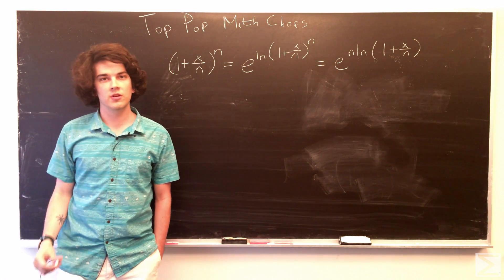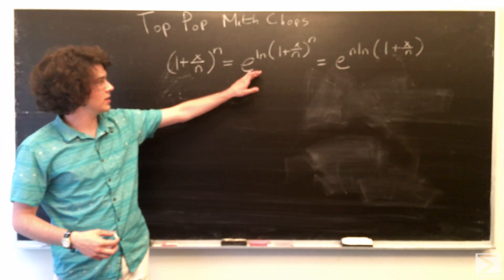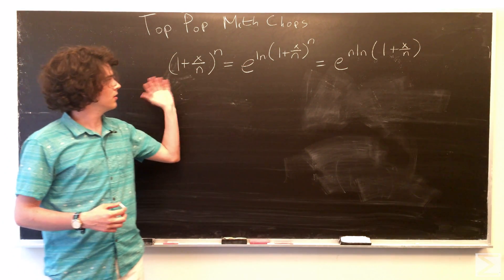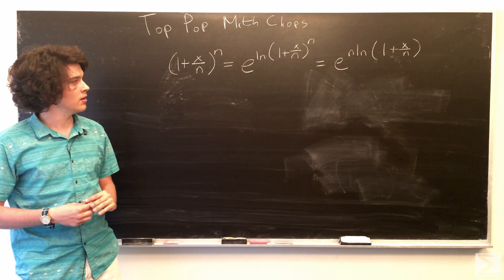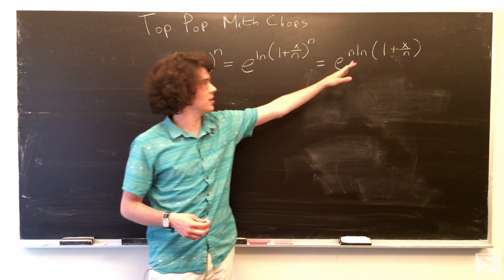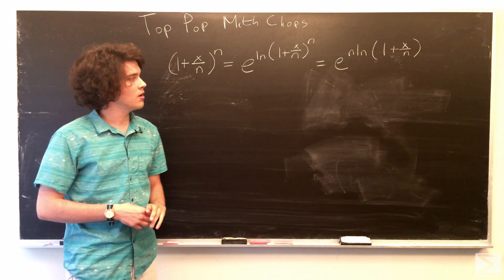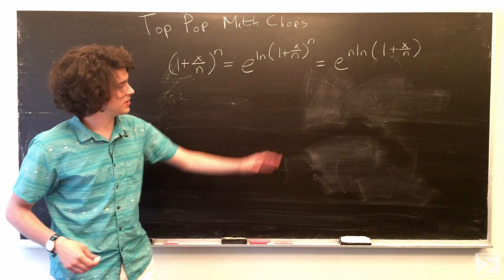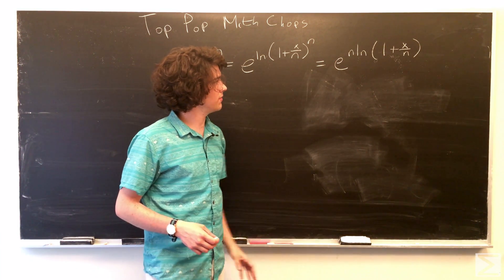So, using our definition of the exponential function, we can rewrite it as e raised to the natural log of our big equation here. And properties of logarithms tells us we can bring this n down and have n times the natural log of that. And, of course, we're taking the limit as n approaches infinity of this whole thing.